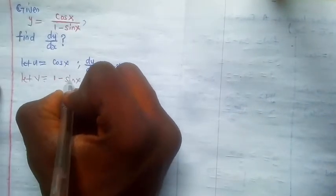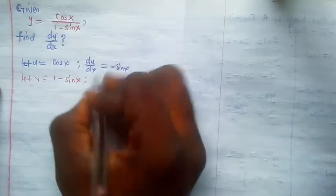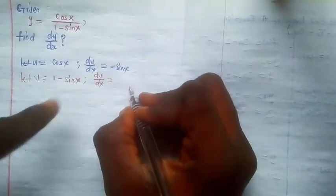Let v be the denominator, which is 1 minus sine x. If v is the denominator, 1 minus sine x, then let's differentiate v with respect to x.